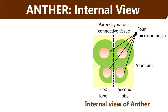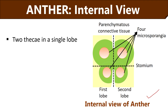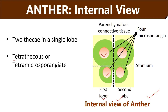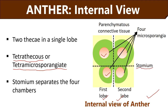We have discussed the external features of an anther. Now it's time to study the intrinsic features. If you cut the anther transversely, you would find this kind of view. In this diagram you can see two theka, each in the first lobe and the second lobe, which is why the anther is sometimes called tetrathecous or tetramicrosporangiate. Theka or microsporangia refers to the smaller units within the anther that store the male gametes or pollen grains. The number of theka may vary in different flowers. Stomium is the region of pollen dehiscence that separates these four chambers.